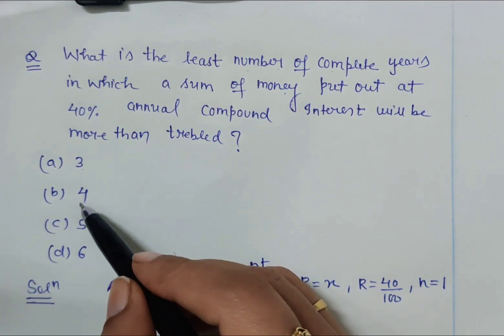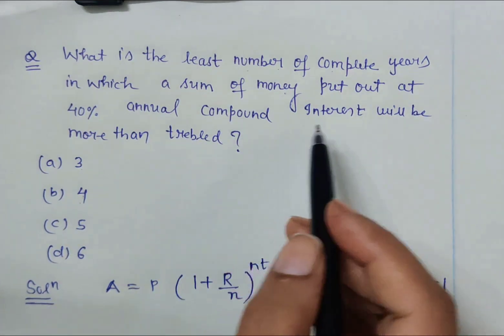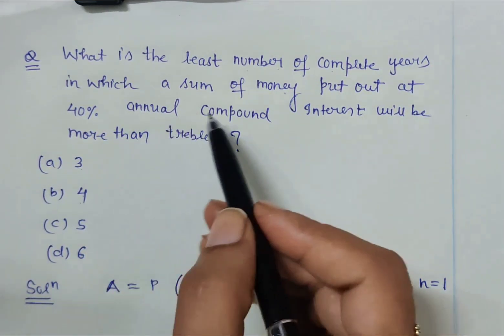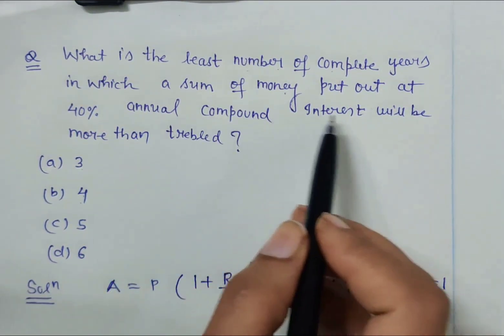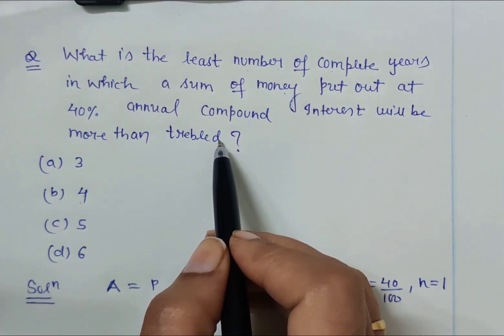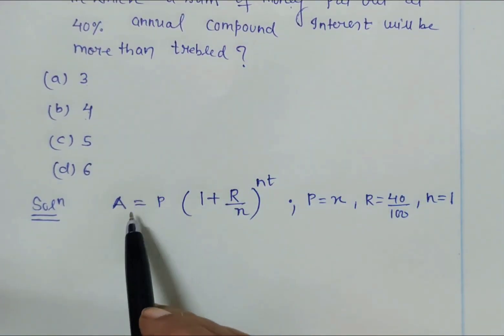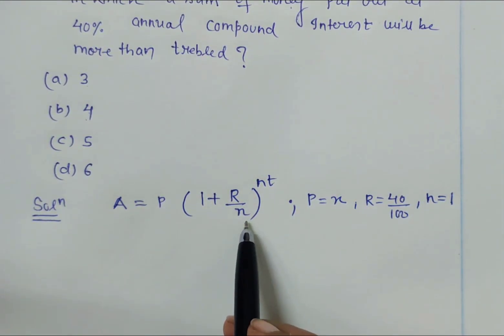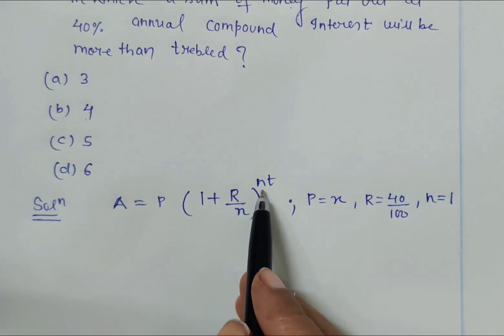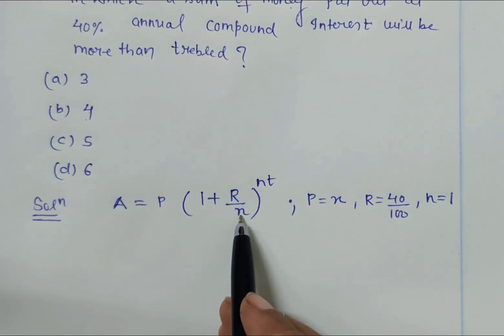Out of these four options - three years, four years, five years, or six years - which is correct? For compound interest problems, we have this formula: A = P(1 + R/n)^(nt).